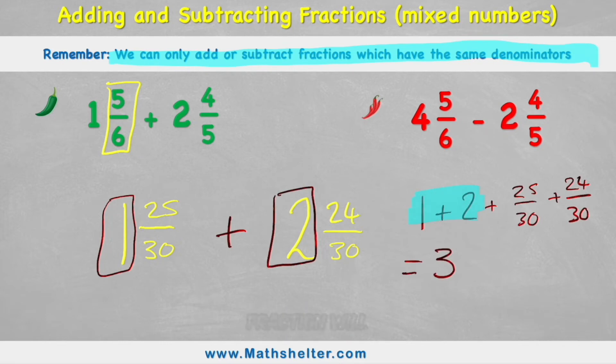1 plus 2 is obviously 3. And then my fraction will be, of course, still in thirtieths, because I'm adding 25 thirtieths to 24 thirtieths. Just like saying if I added 25 elephants to 24 elephants, I'm still going to be having something elephants. And 25 plus 24 is 49.